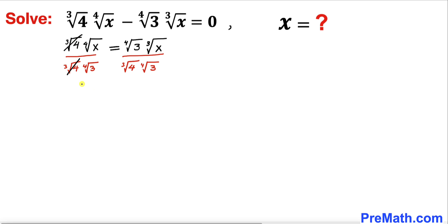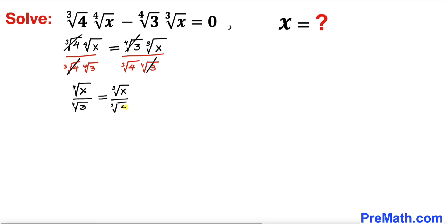We can see that terms cancel, so we end up with the 4th root of x in the numerator divided by the 4th root of 3 in the denominator, equals the cube root of x divided by the cube root of 4.